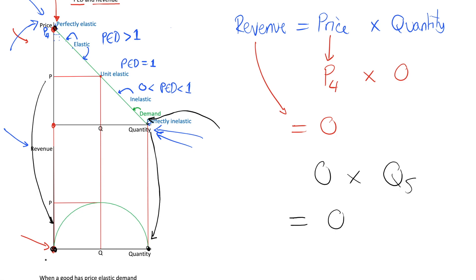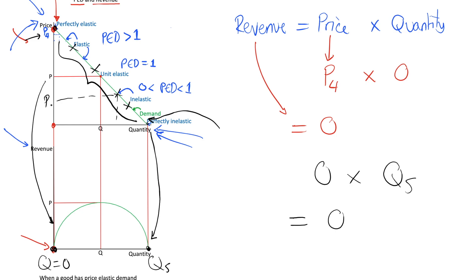So the revenue curve has two points with zero revenue — at quantity 0 and at quantity Q5. Either we've set a really high price and no one wants our good, or we've set such a low price we're not making any money. In between these two extremes we have positive revenue. For any price and quantity combination on the demand curve, such as P6 and Q6, our revenue will be P6 times Q6.